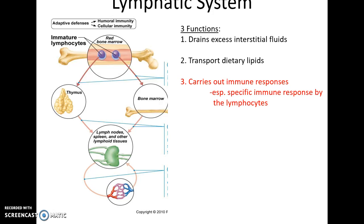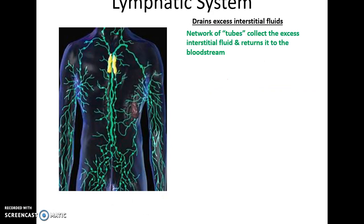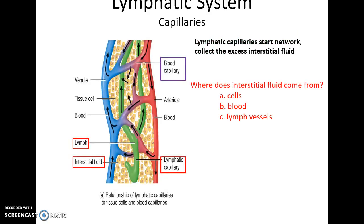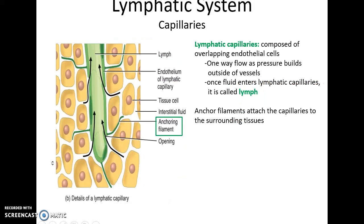Function one: draining excess interstitial fluids. Basically there's a network of tubes running throughout the body that will collect the excess fluid and return it to the bloodstream. This all starts with the super tiny microscopic lymphatic capillaries, which collect the excess interstitial fluid. This excess fluid comes from the bloodstream — the fluid from the plasma enters the tissues bringing nutrients and oxygen, and more fluid stays in the tissues than returns to the bloodstream. When fluid enters the lymphatic capillaries, it is now called lymph.